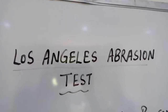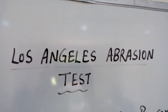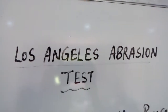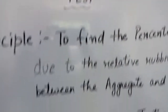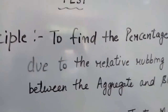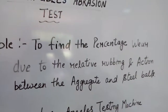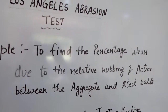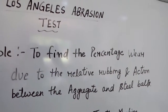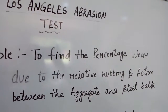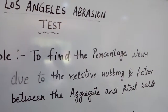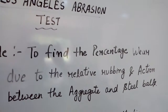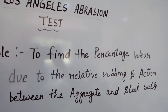Welcome to Civil Animal. Today we have to discuss the Los Angeles Abrasion Test. The principle of this test is to find out the percentage of wear due to the relative rubbing and action between the aggregate and the steel balls.